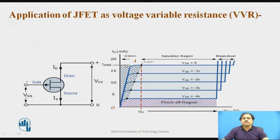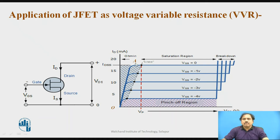Looking at the drain characteristics graph, some regions are marked. The region from O to A is called the Ohmic region. From A onward, the output does not change as sharply. Above the vertical line, the current remains constant — this is called the saturation region, also known as the pinch-off region.